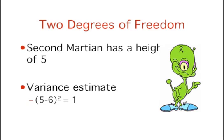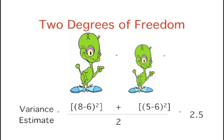If we sampled another Martian and obtained a height of 5, then we could compute a second estimate of the variance: 5 minus 6 squared, which equals 1. We could then average our two estimates, 4 and 1, to obtain an estimate of 2.5. Since this estimate is based on two independent pieces of information, it has 2 degrees of freedom.